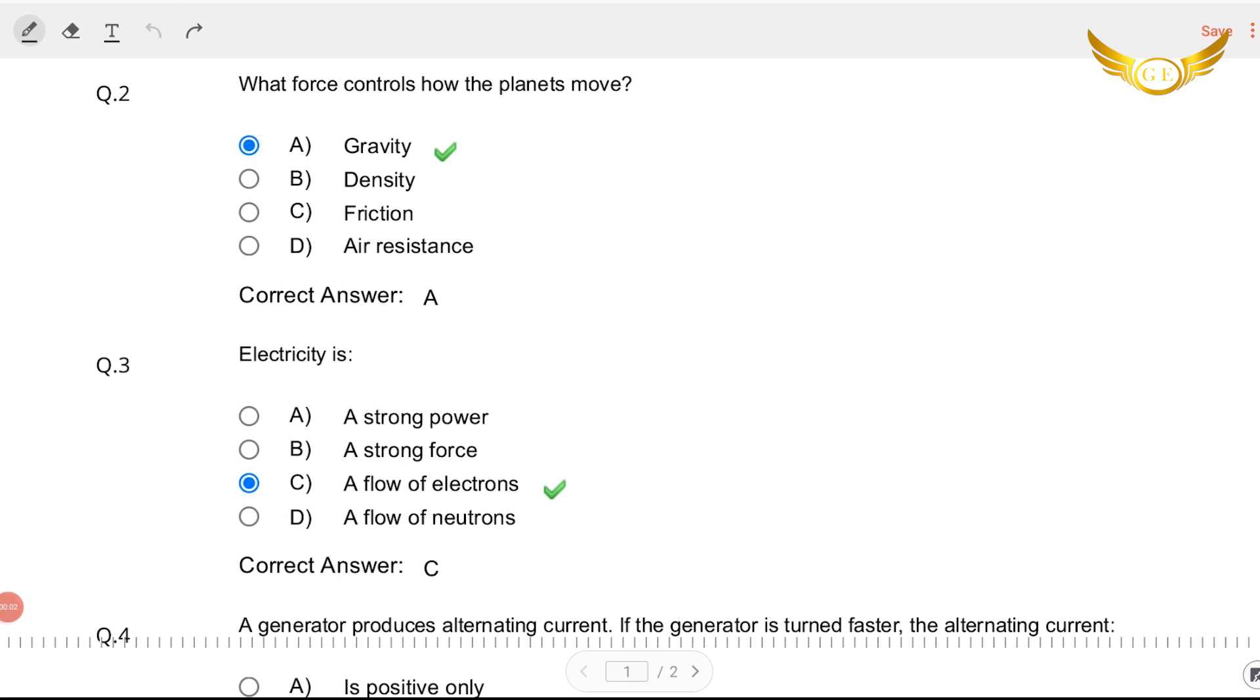So let's begin with question paper number two. The first question is what force controls how the planets move? So the planets are controlled by gravity. The movement of the planet is controlled by gravity and that's the right answer.